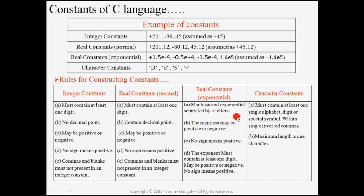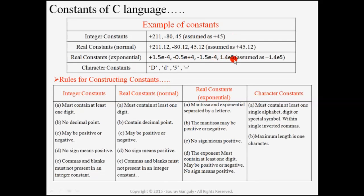For the exponential case: the mantissa and exponent are separated by the letter E. For example, 1.4 is the mantissa and 5 is the exponent, written as 1.4E5. The mantissa may be positive or negative — no sign means positive. The exponent must contain at least one digit, and no sign means positive. So 1.4E5 means plus 1.4 times 10 to the power plus 5.